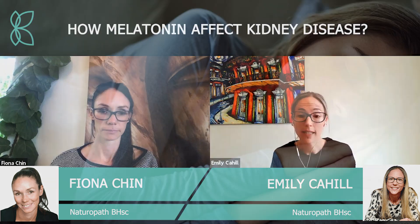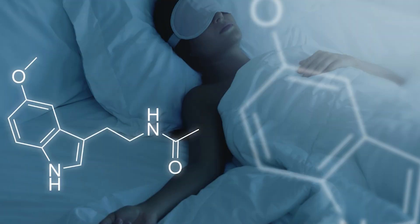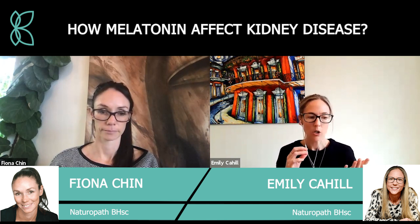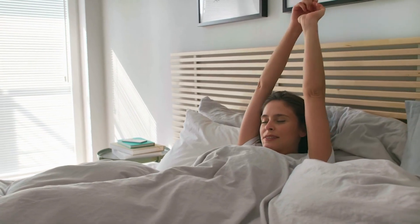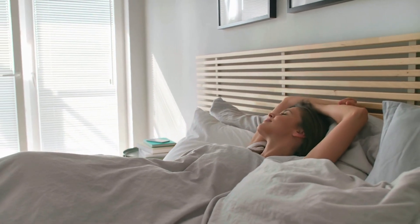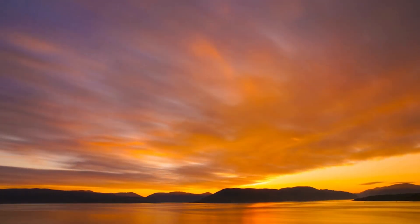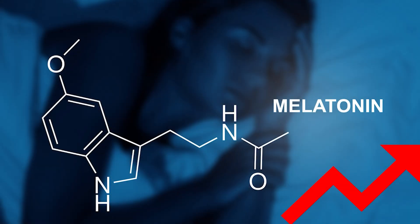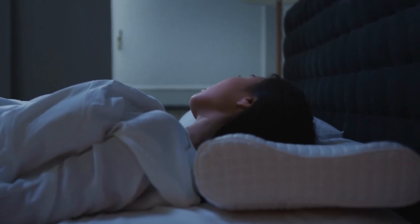Melatonin is often only known for its role in sleep — it's our sleep hormone. During the day while we're awake, our melatonin levels drop. Then as we're getting closer to the evening and being exposed to more darkness, our melatonin levels rise. That's when we release most of our melatonin, which helps us feel sleepy, fall asleep, and stay asleep during the night.